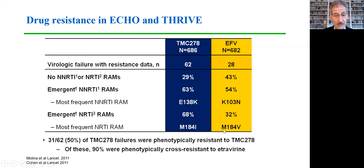While the most common mutation there was one conferring 3TC or FTC resistance, in the case of the rilpivirine arm it was the M184I mutation, whereas in the case of the efavirenz arm it was the more familiar M184V mutation.